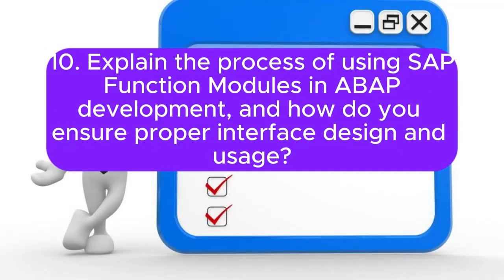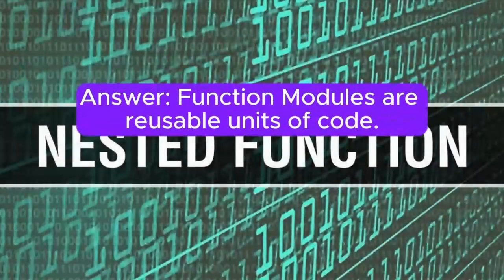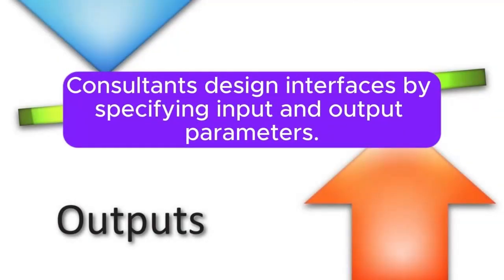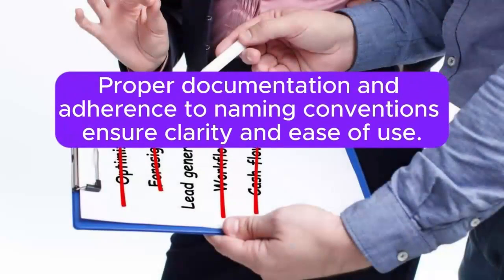Question 10: Explain the process of using SAP function modules in ABAP development, and how do you ensure proper interface design and usage? Answer: Function modules are reusable units of code. Consultants design interfaces by specifying input and output parameters. Proper documentation and adherence to naming conventions ensure clarity and ease of use.